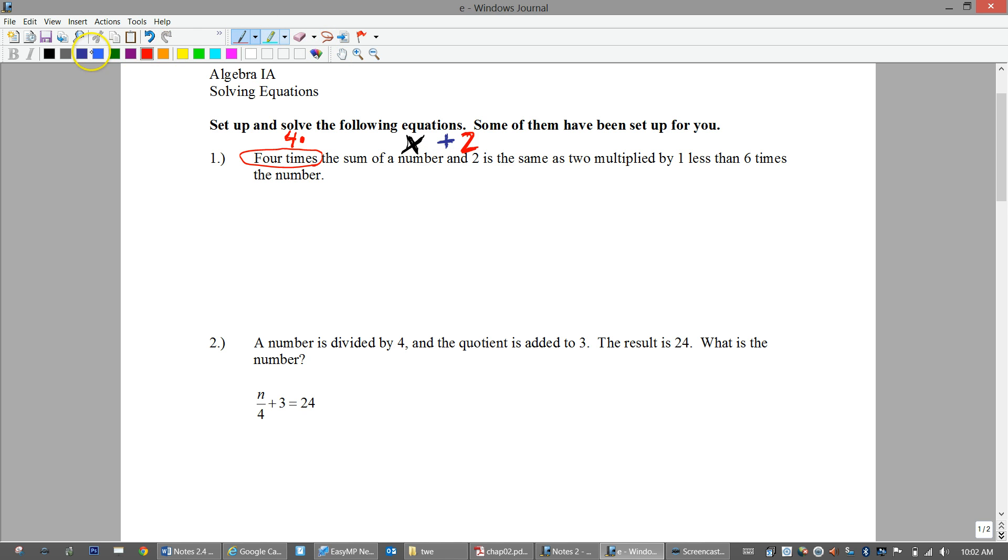Does that make sense? The plus sign actually comes from the statement the sum, we're doing a sum of the numbers. And the two comes from the and two. Is the same as, what does that mean in math? Means equals, so write down the equals. That's two times, multiplied by.